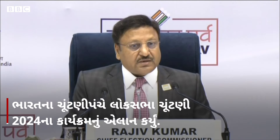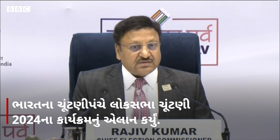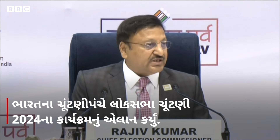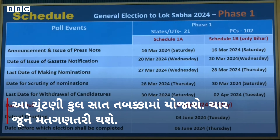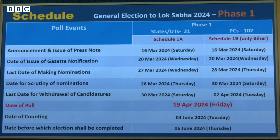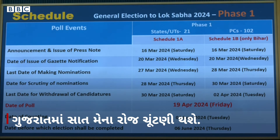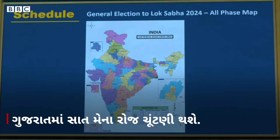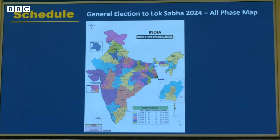Gujarat will be covered, the North East will be covered. The schedule of the Lok Sabha poll: Phase 1 will start from 20th March notification — 5 days from now — and last date of withdrawal would be 30th March and date of poll would be 19th of April. Across the country, counting will take place after polling.